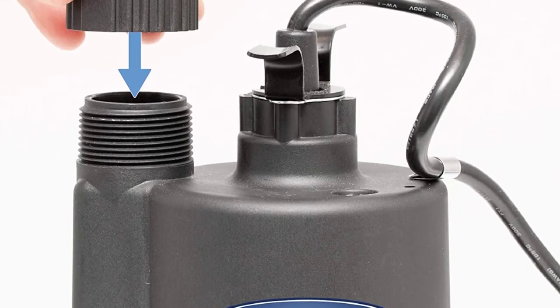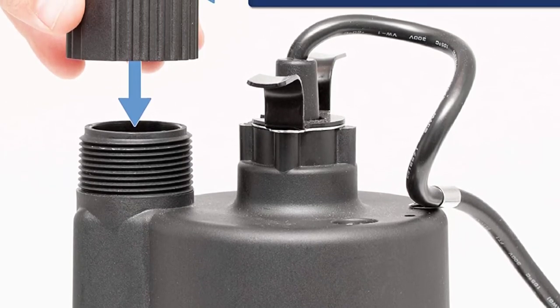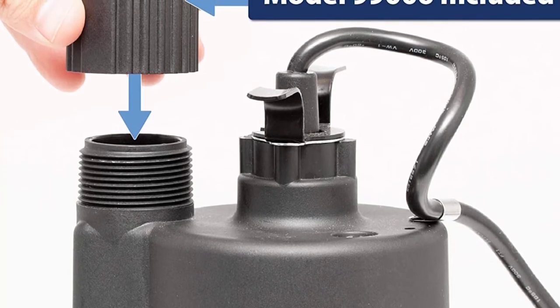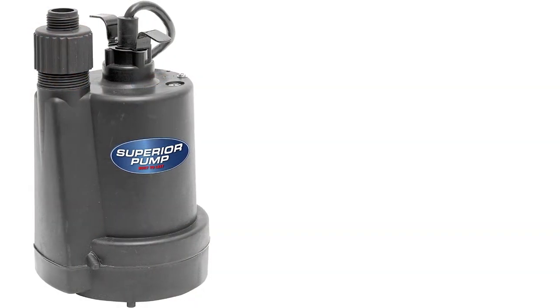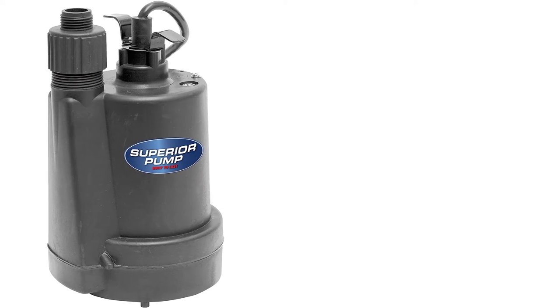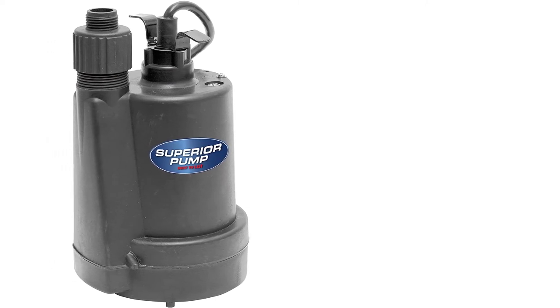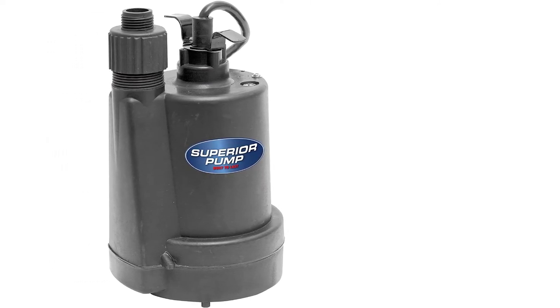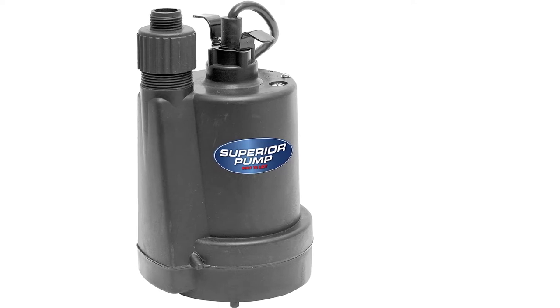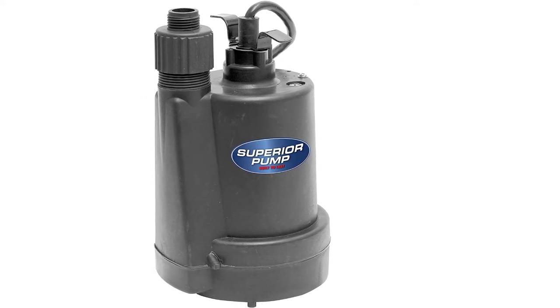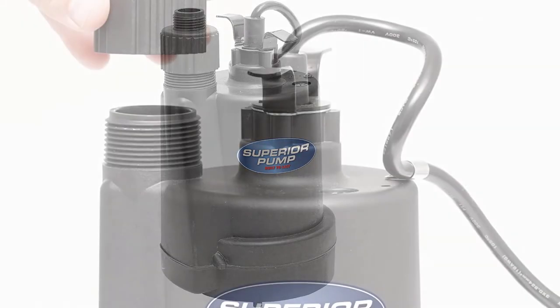Besides, Superior Pump is a one-quarter HP thermoplastic submersible utility pump with a 10-foot power cord and three-quarters inch garden hose adapter that smoothly transfers water up to 1800 gallons per hour. Also its thermoplastic structure ensures the pump strength and lifts water up to 25 feet of vertical height.